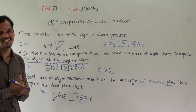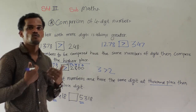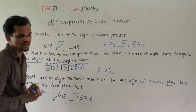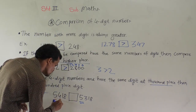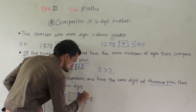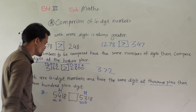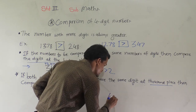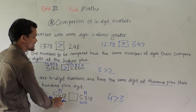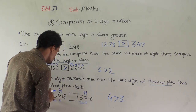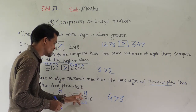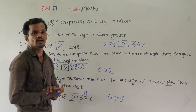The thousands digit is the same in both numbers, so now you have to compare the hundreds digit. Here 4 is at the hundreds place and here 3 is at the hundreds place. You know that 4 is greater than 3, so this number is greater — 5418 is greater than 5318.